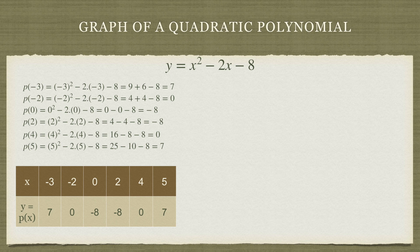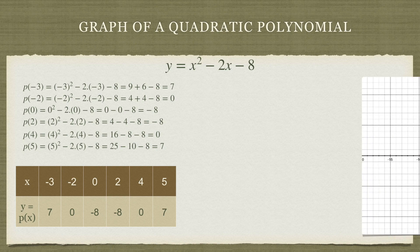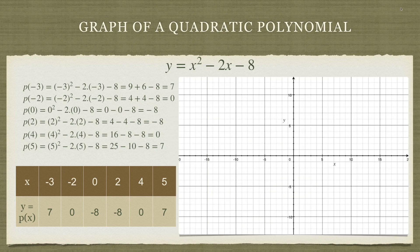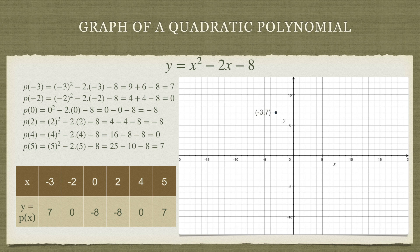What we are going to do now is plot each of these points on the graph paper. This is the graph paper. Our first point is minus 3, 7. So our first point will be over here. Similarly our second point is minus 2, 0. So the second point is going to be here.